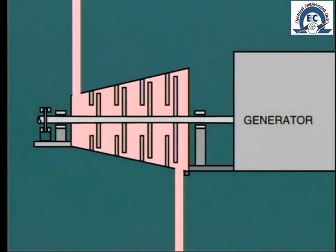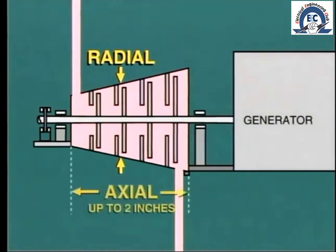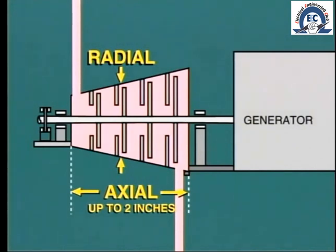In actual fact, the expansion of the turbine components in the radial direction is quite small. On the other hand, the longitudinal expansion — that is, in the axial direction — is considerable, perhaps 1 to 2 inches between the cold and full load condition.